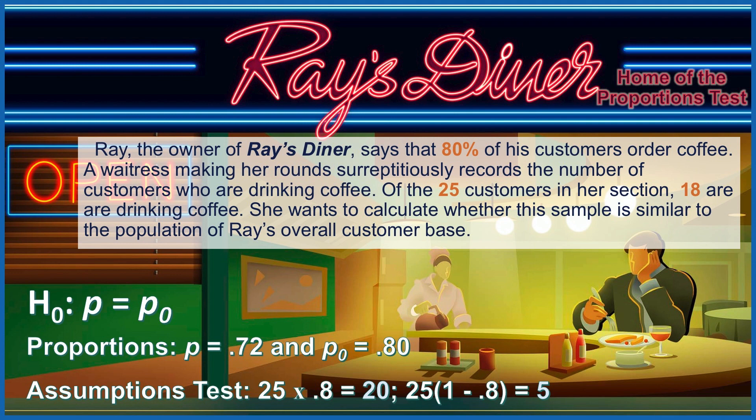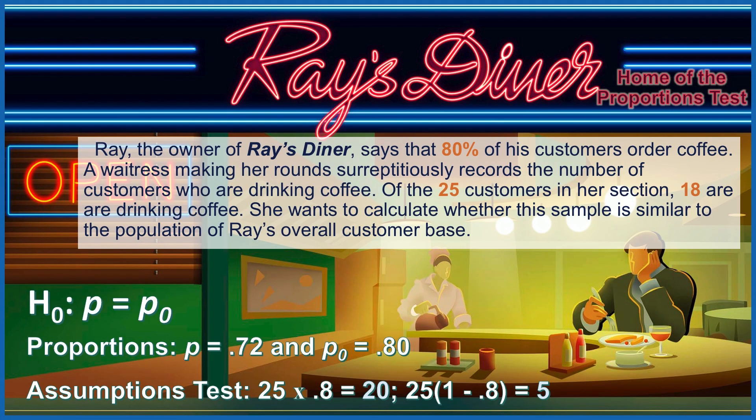The null hypothesis would be that the proportion of our sample is equal to the proportion for the population. But of course we need to figure out what is the proportion for our sample. We would do that by dividing 18 by 25, giving us a proportion of 0.72, which will compare to the proportion of 0.80. We want to be sure to check the assumptions for the test. Well, 25 times 0.8 is 20, that's greater than 5. And 25 times (1 minus 0.8) is 5. The assumptions have been met. We can use the normal distribution for this test.